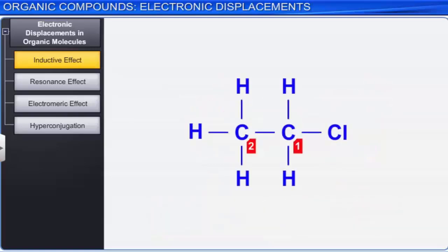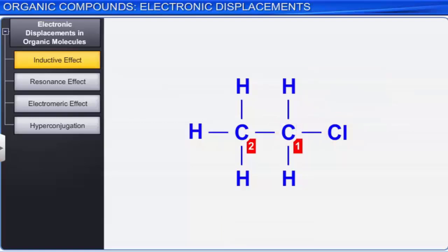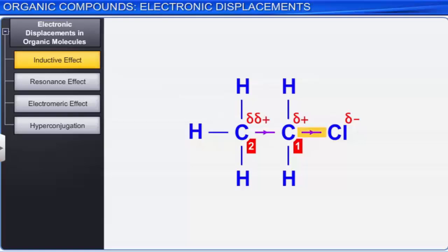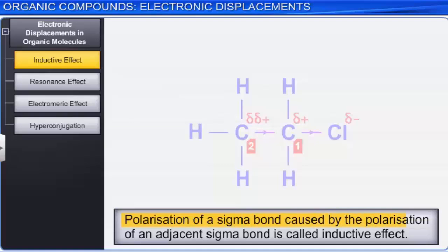For example, in chloroethane, chlorine is more electronegative than carbon. Hence, the electron pair shared between carbon and chlorine is displaced towards the chlorine atom. Thus, a partial negative charge is acquired by chlorine and a partial positive charge by carbon. The partial positive charge on C1 draws some electron density from the adjacent carbon-carbon bond, causing C2 to acquire a smaller positive charge. Thus, the carbon-chlorine bond induces polarity in the adjacent bonds. Such polarization of a sigma bond caused by the polarization of an adjacent sigma bond is called the inductive effect.